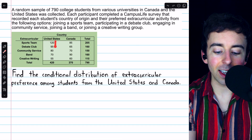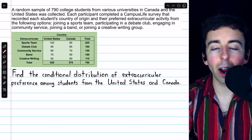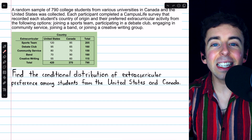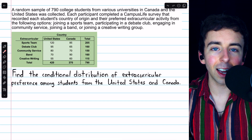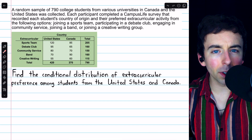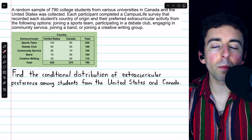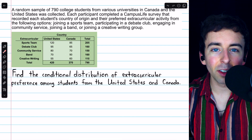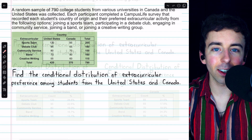So this is the conditional distribution for extracurricular preference given that a student is from the United States. But typically with conditional distributions, we prefer to have percents, so let's look at those calculations.